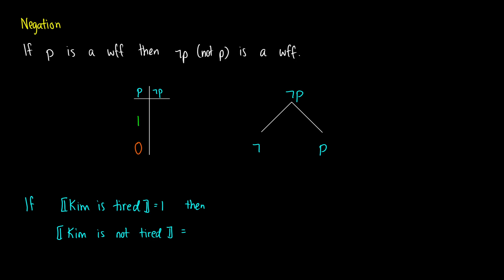Negation is our first operator. It takes a single proposition and negates it — so if you have a proposition p, you can make a proposition not-p. We use a little bar to mean 'not.' If p is a well-formed formula, then not-p is a well-formed formula. The truth table tracks what happens: if p is true, like 'I am happy,' then not-p — 'I am not happy' — ends up being false.